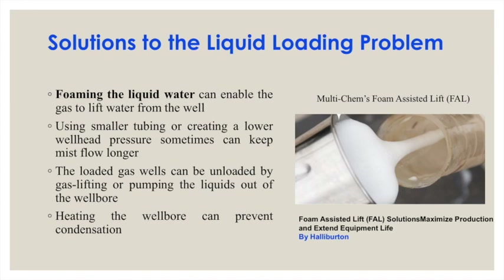On the right is shown a multi-camp foam-assisted lift adopted by Halliburton, where a foam composition is mixed with water to reduce its density so it can be lifted. The exact formulation is proprietary. Another approach is using smaller tubing or creating a lower wellhead pressure, which can keep the mist flow active longer, allowing the gas-liquid mixture to move at a faster rate due to increased pressure differential.